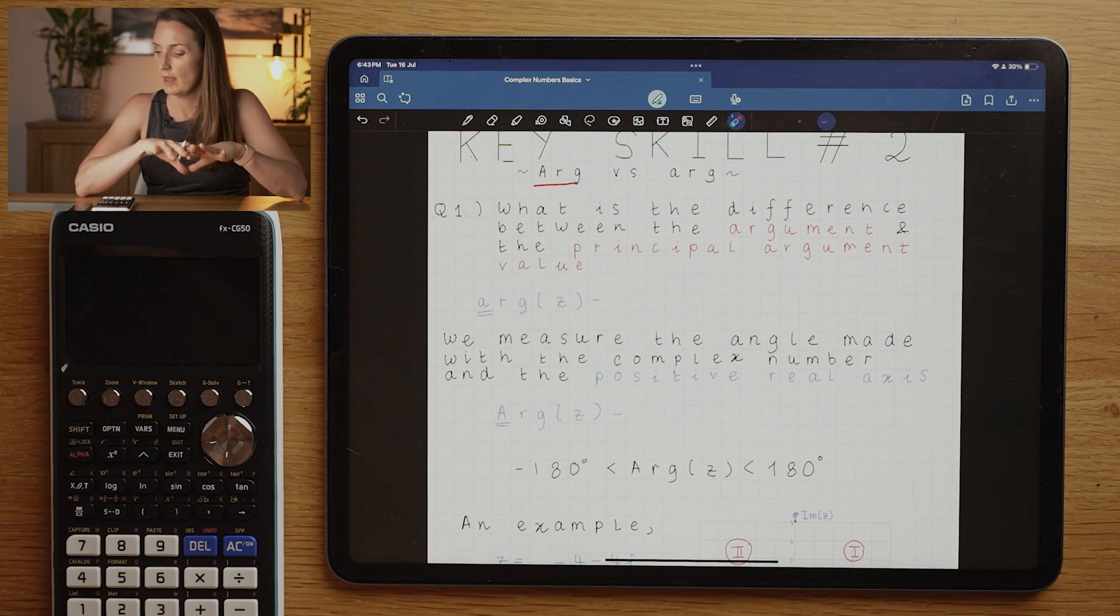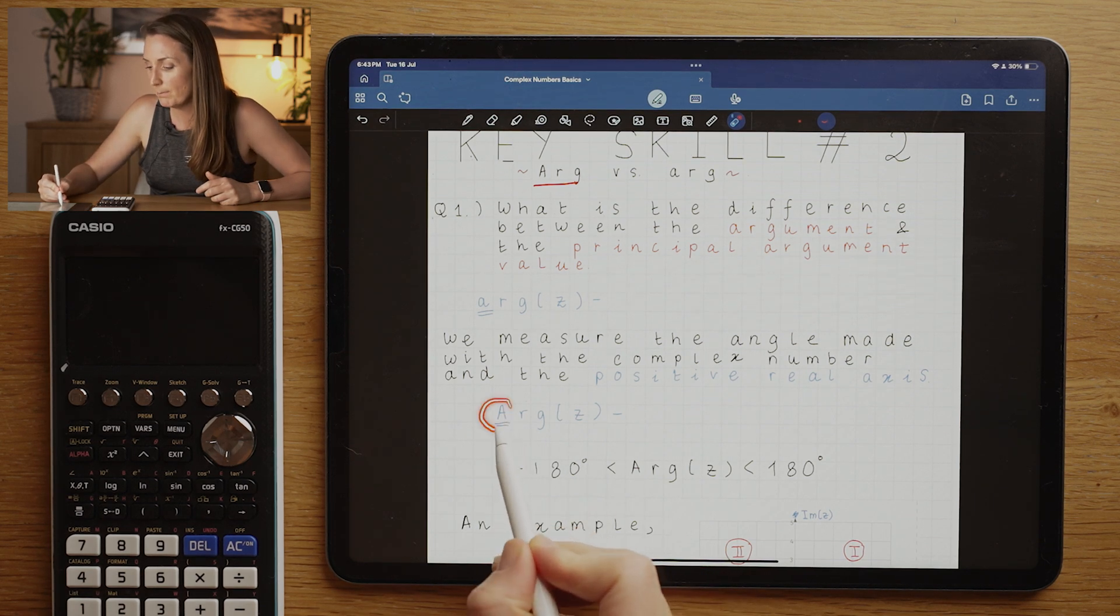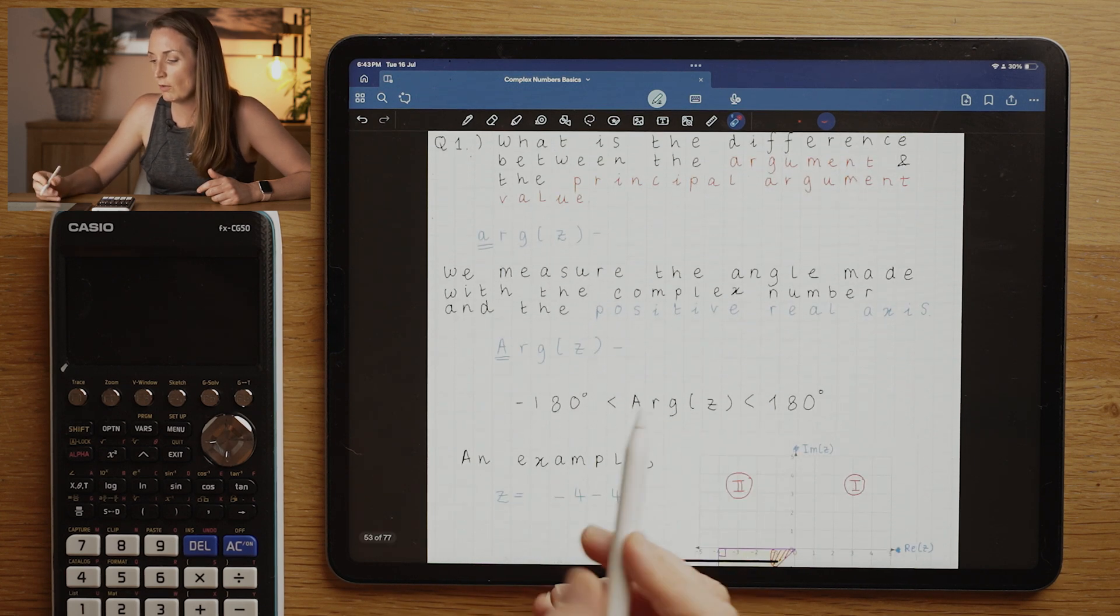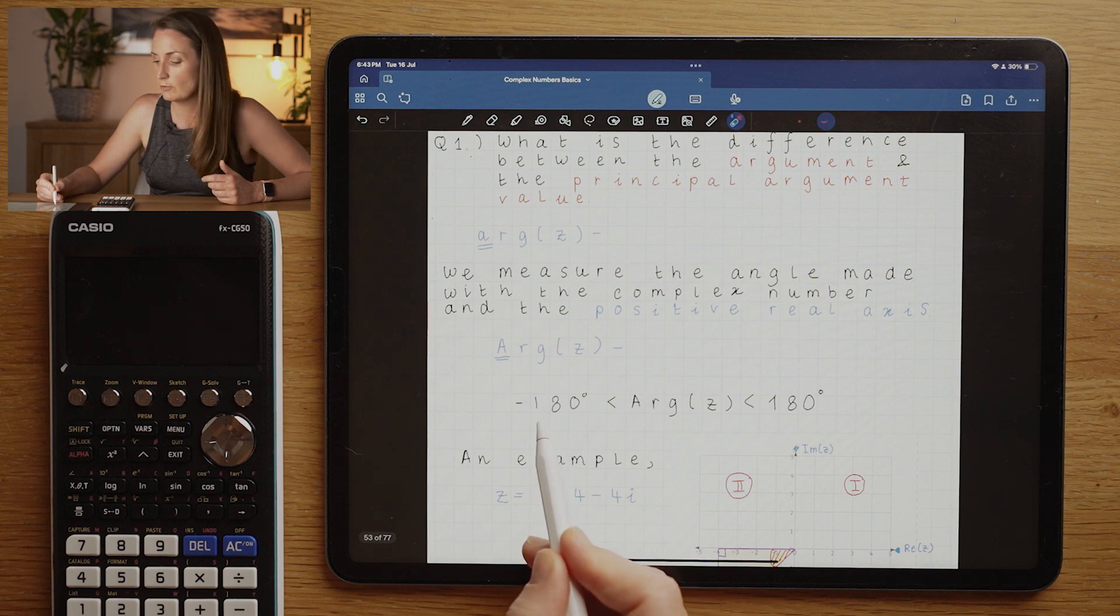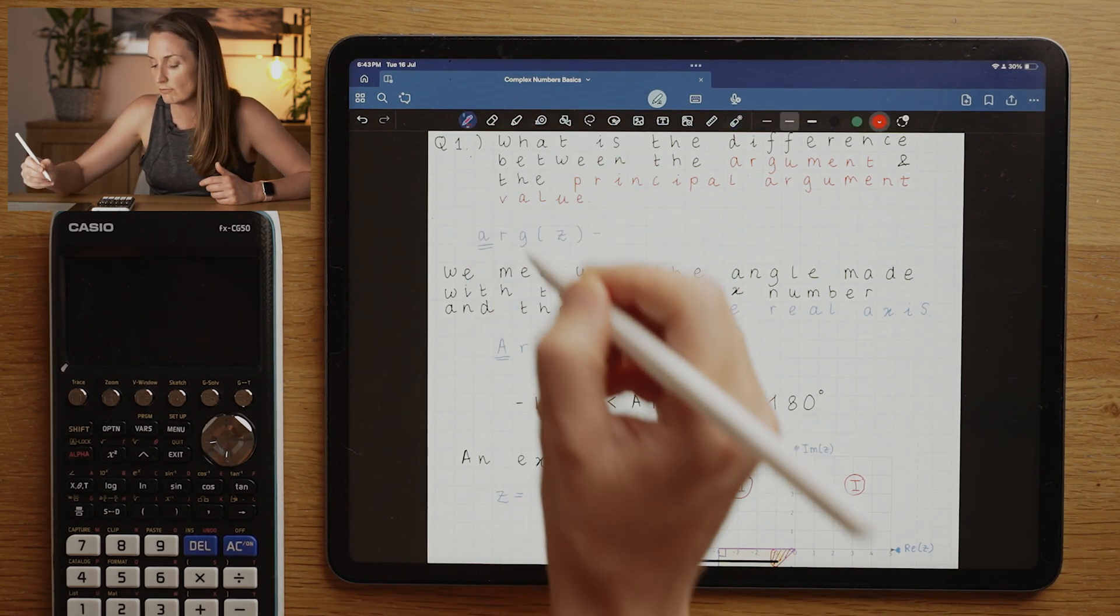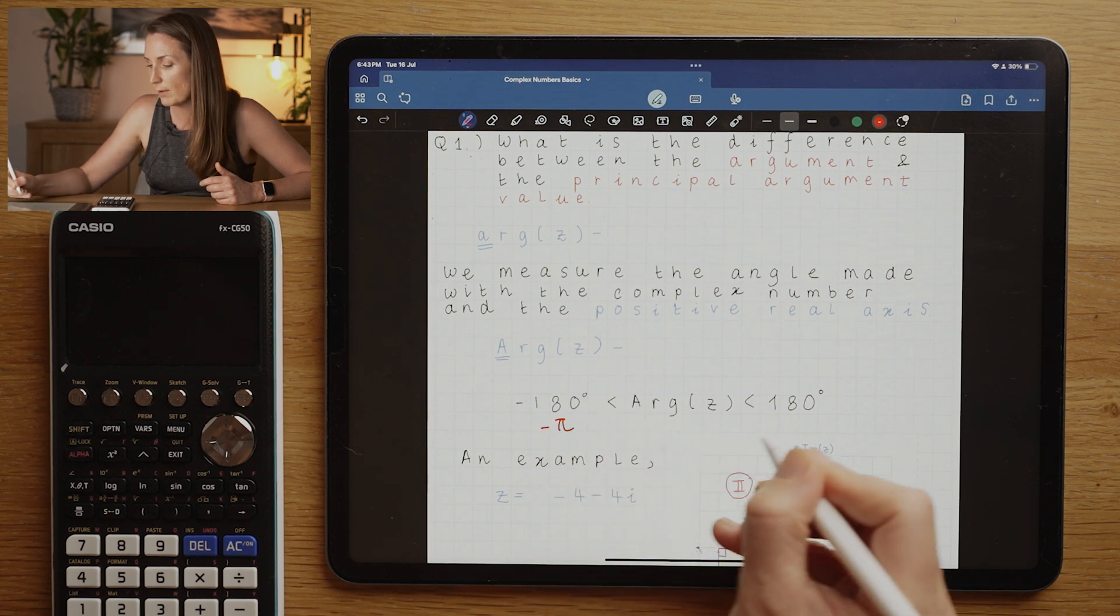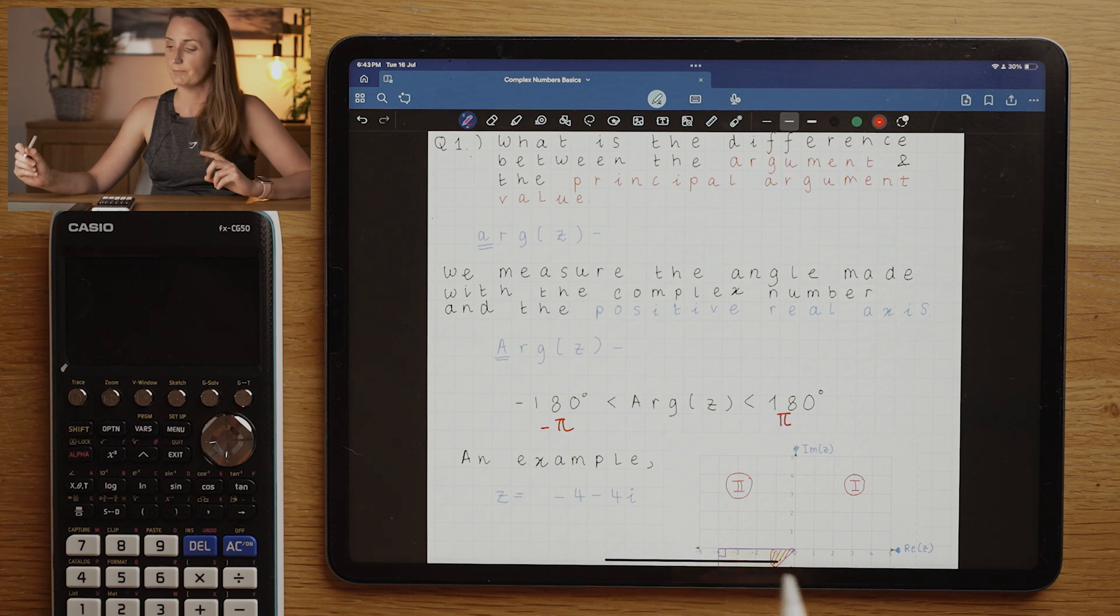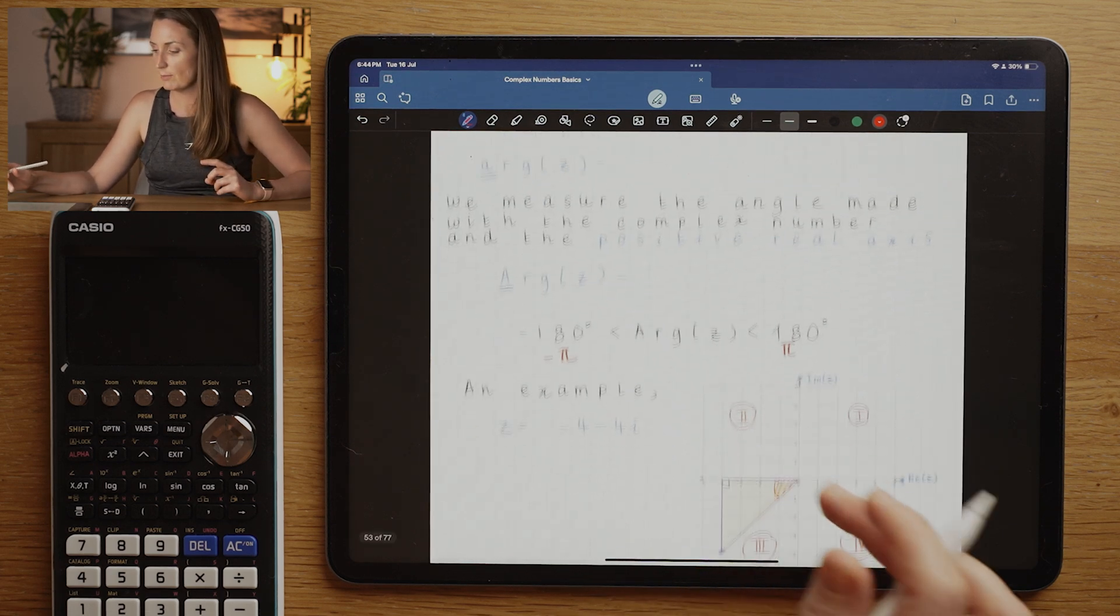If you have a big Arg, which we call the principle argument form, you are only allowed to use angles between minus 180 and plus 180, or in radians we could go from minus π to plus π. That makes things a little bit trickier. Here's an example to illustrate what I'm talking about.